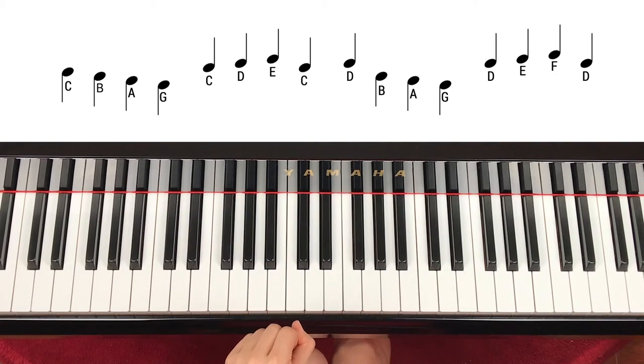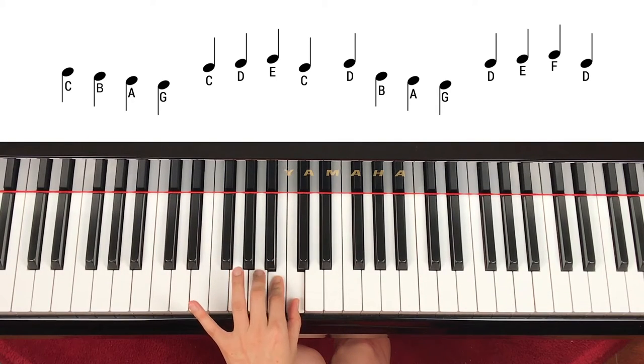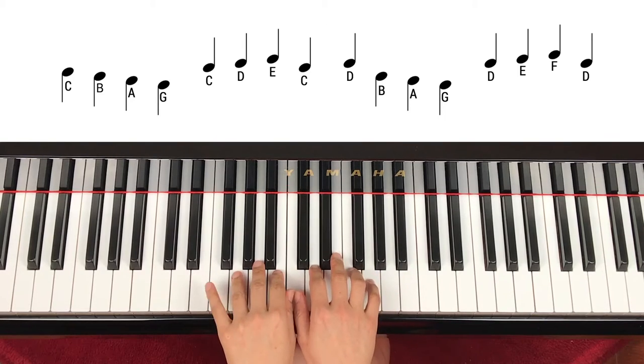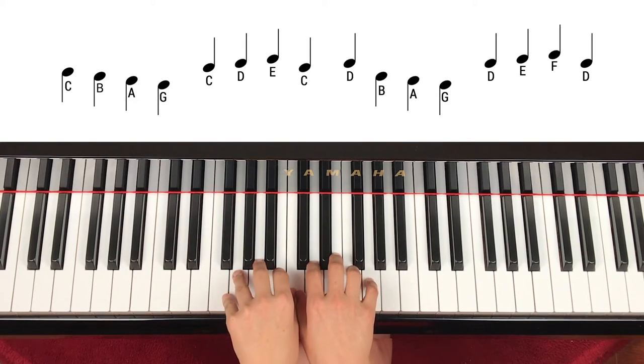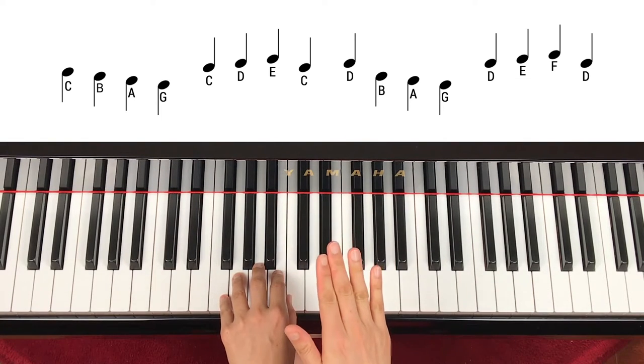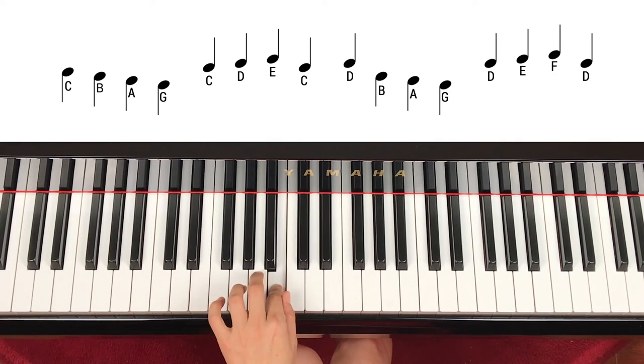Look at the music first. Note names are C, B, A, G. And since the stems point down, it means play with your left hand: C, B, A, G. Now let's start slow. Place both hands on keys. One, two, three, go. C, B, A, G.